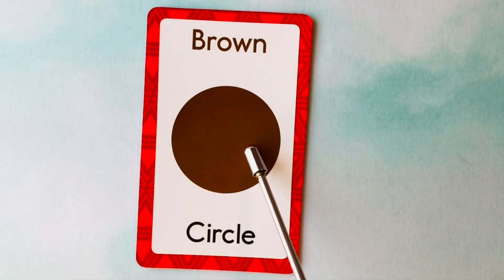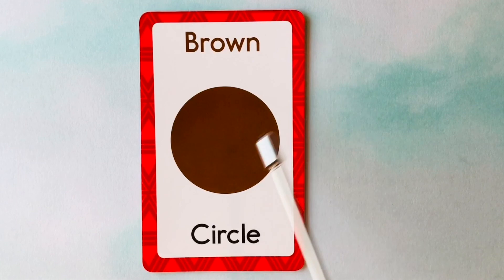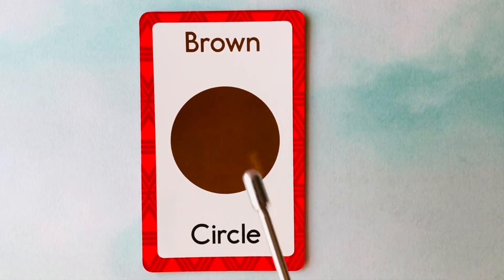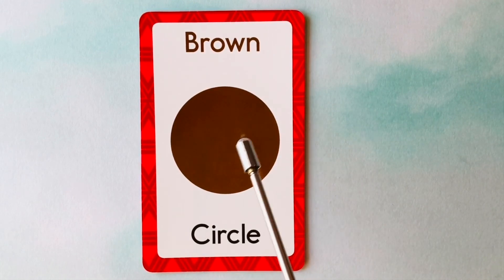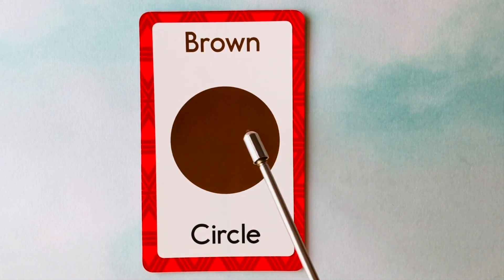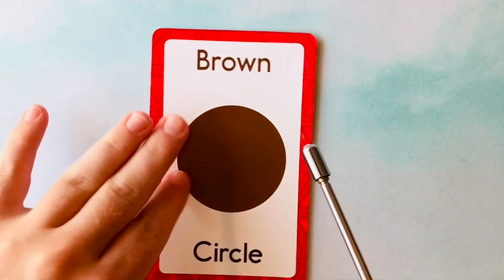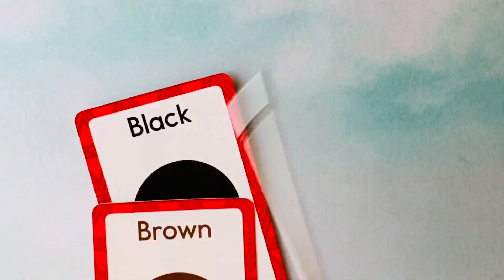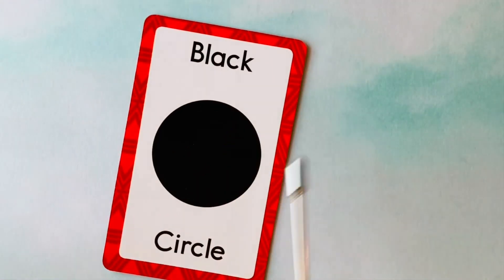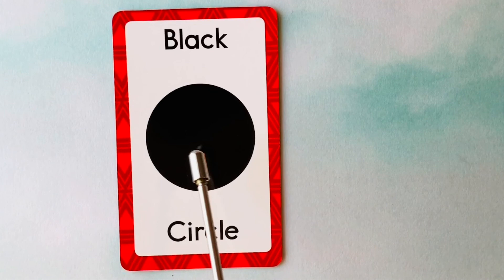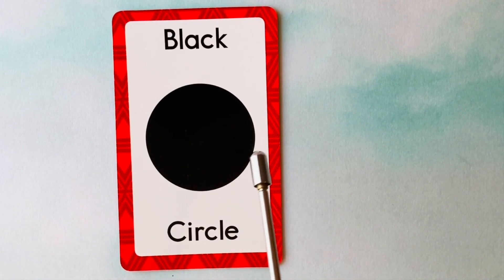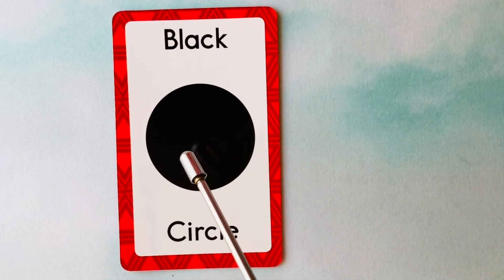This is a circle. What color is this circle? It's a black circle. This is a black circle.